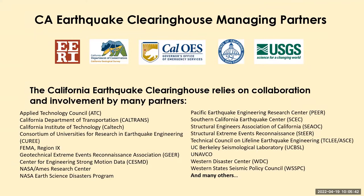The California Earthquake Clearinghouse managing partners consist of ERI, California Geological Survey, Governor's Office of Emergency Services (Cal OES), the Seismic Safety Commission, and the U.S. Geological Survey. We have many other partners that we rely on for their collaboration and involvement. A little bit about the historical background: the first informal California Earthquake Clearinghouse was convened by state geologist Wesley Brewer the day after the magnitude 6.6 San Fernando earthquake in 1971.